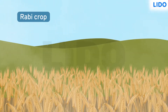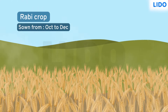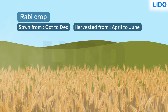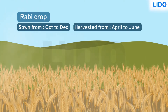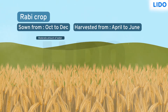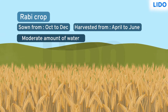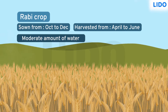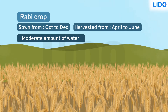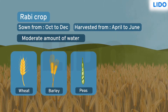Rabi crops are sown in the winter season from October to December and harvested from April to June. These crops require moderate amounts of water for growth and do not depend on rainfall. Some examples of Rabi crops are wheat, barley, peas and gram.